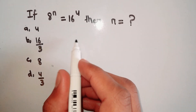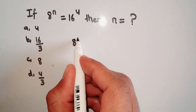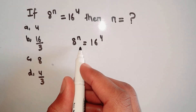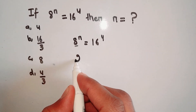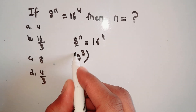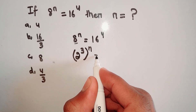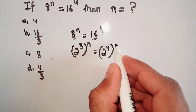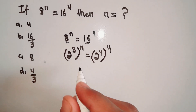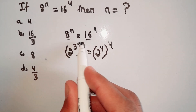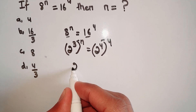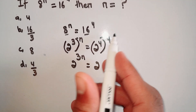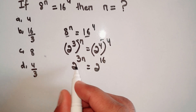First of all, we write 8 power n is equals to 16 power 4. Now here we write 8 as 2 power 3, whole power n, is equals to 16 as 2 power 4, whole power 4. Now we multiply the powers, so we write 2 power 3n is equals to 2 power 16.